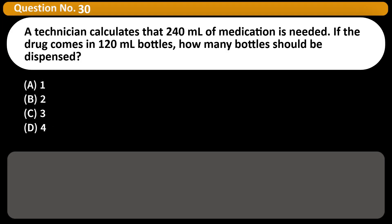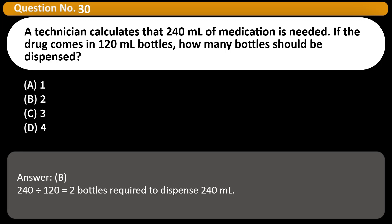A technician calculates that 240 mL of medication is needed. If the drug comes in 120 mL bottles, how many bottles should be dispensed? A. 1. B. 2. C. 3. D. 4. Answer: B. 240 divided by 120 equals 2 bottles required to dispense 240 mL.